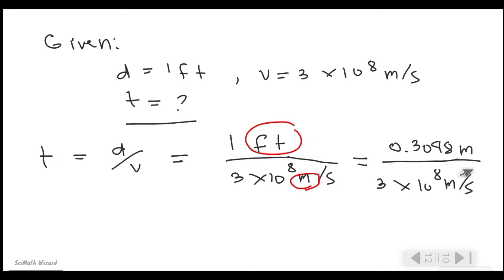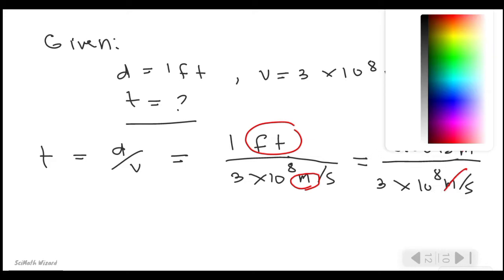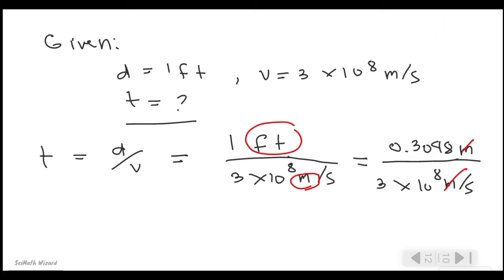So we can now cancel this out here and this one here. And after that, divide the value. So 0.3048 divided by 3 times 10 to the power of 8.